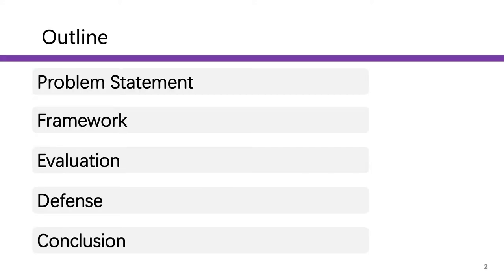This talk will be divided into five parts. First, I will introduce some background knowledge about crowdsourcing, truth discovery, and some related work. In the second part, I am going to talk about the problem we are going to solve and our proposed attack framework. Then, I will discuss the experimental results of our proposed attack. In the fourth part, I am going to introduce two defenses to mitigate our data poisoning attacks. After that, I will conclude my talk.